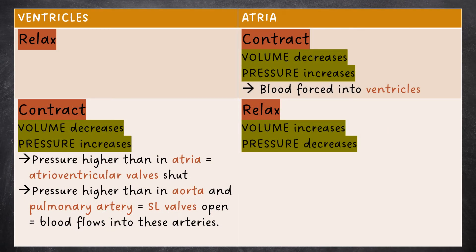During the cardiac cycle, first the ventricles relax and the atria contract. This means that the volume of the atria decreases and the pressure in the atria increases, meaning that blood is forced into the ventricles.